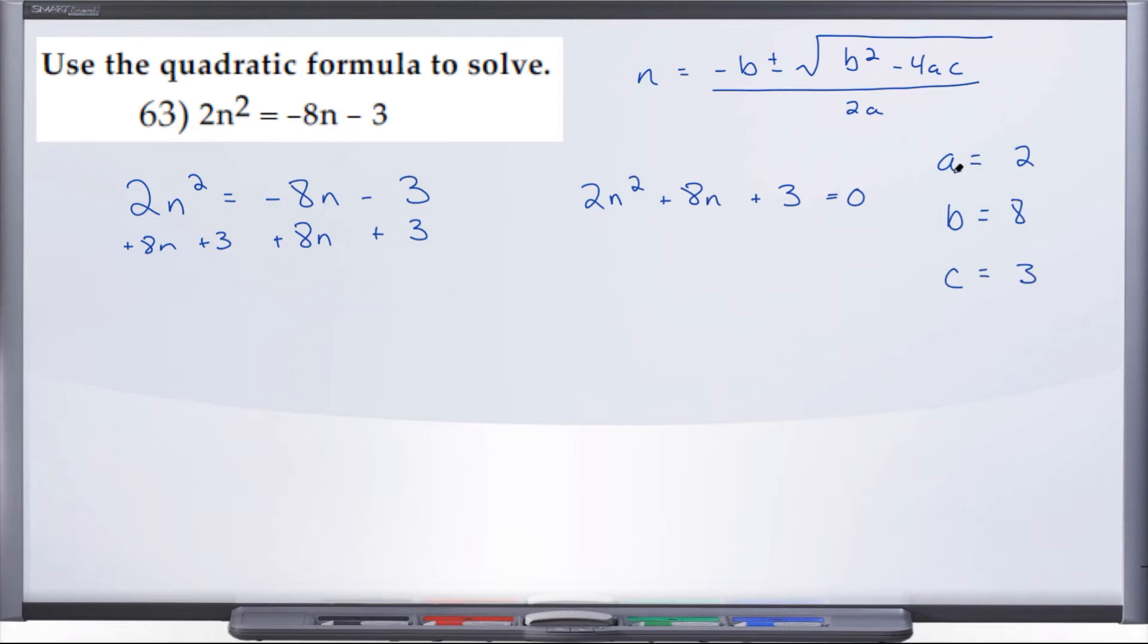And now let's take our a, b, c and plug that into the quadratic equation. So we have n = -b, and it's important when you're plugging in, use parentheses just in case so that it's helpful in making sure that you don't make any little errors with your signs. So n = (-b ± √(b² - 4ac)) / 2a.